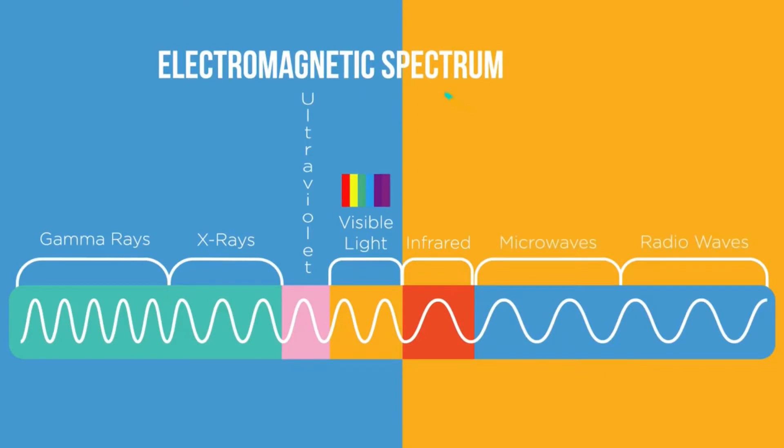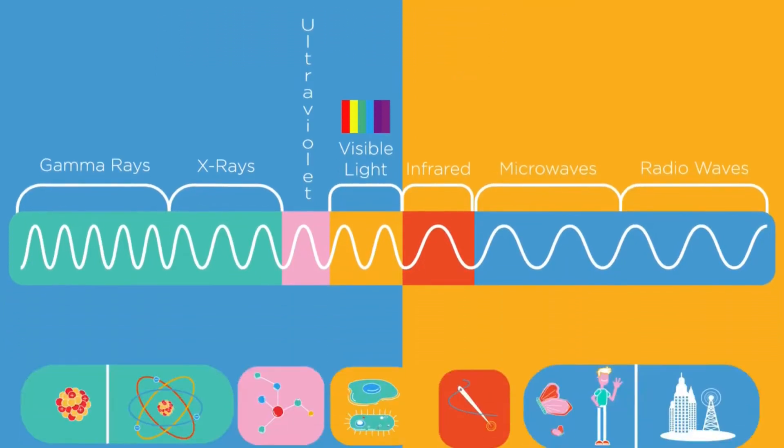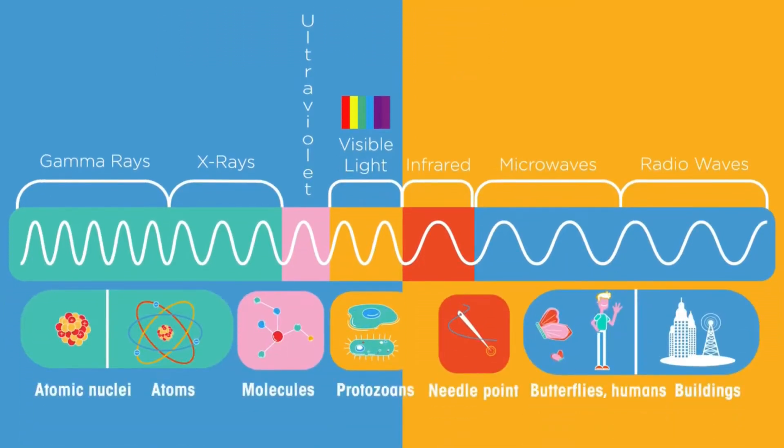Why can you see your reflection in some objects? In this video we will look at ray diagrams for reflection, refraction and color absorption.